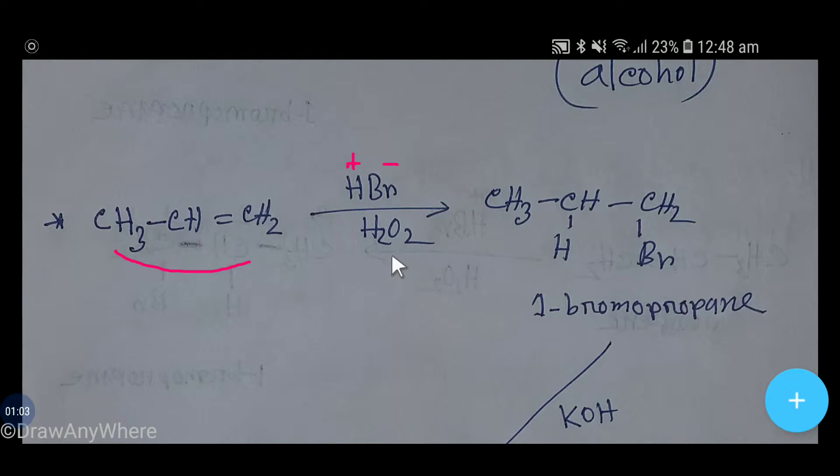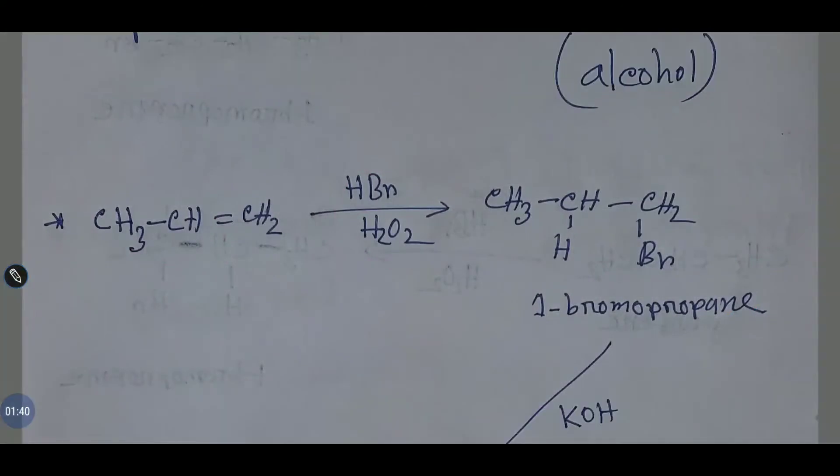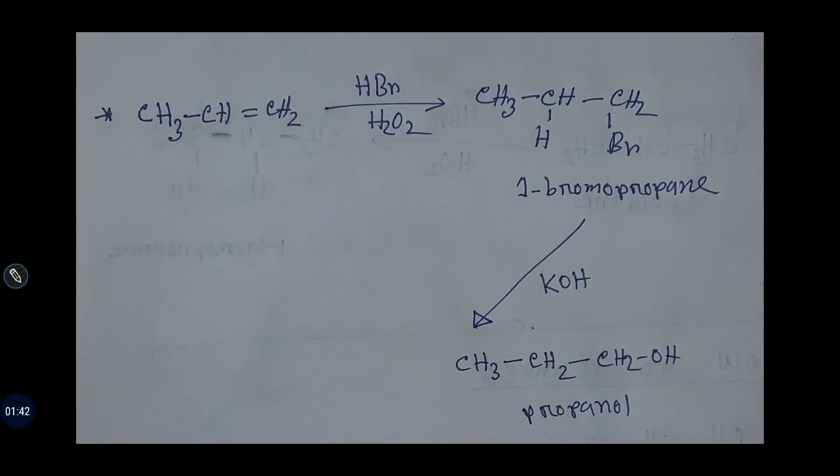In the presence of hydrogen peroxide, the negative part of hydrogen bromide will add to the carbon that has the maximum number of hydrogens. On the other hand, the positive part hydrogen will add to the carbon that has the lowest hydrogen. This is called anti-Markovnikov rule, so we are getting 1-bromopropane.